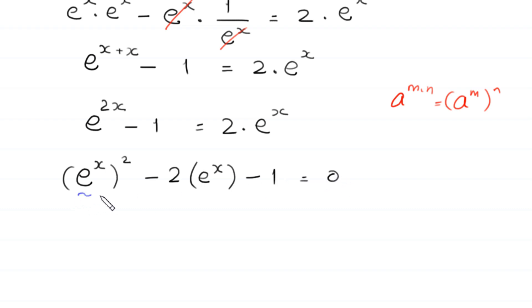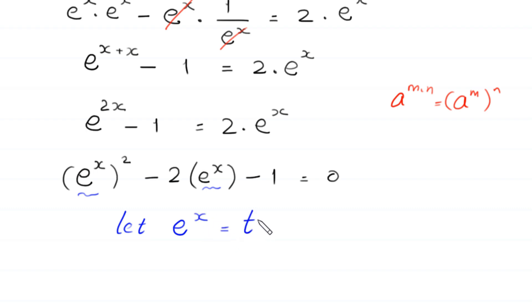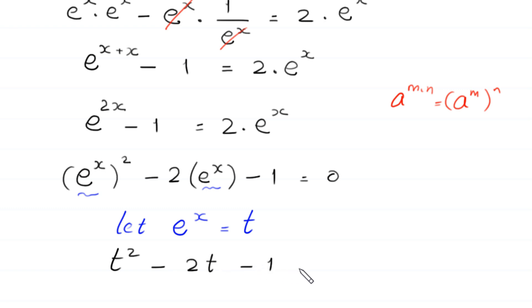Now, here we have e to the power x and here we also have e to the power x. So we suppose that e to the power x is equal to t, and we substitute t into this equation. Then the equation becomes t squared minus 2 times t minus 1 is equal to 0.